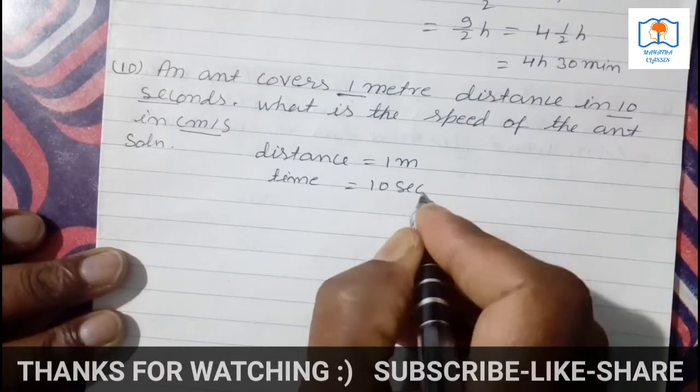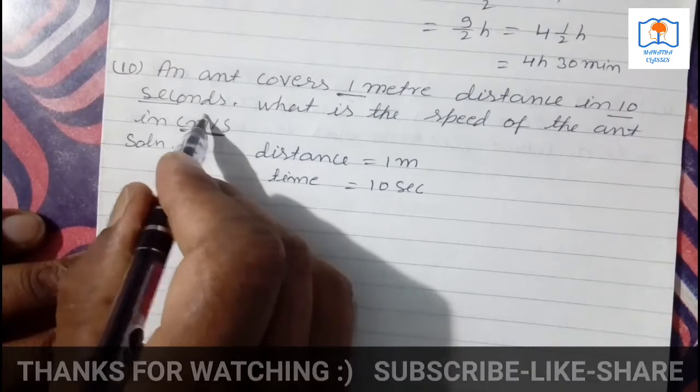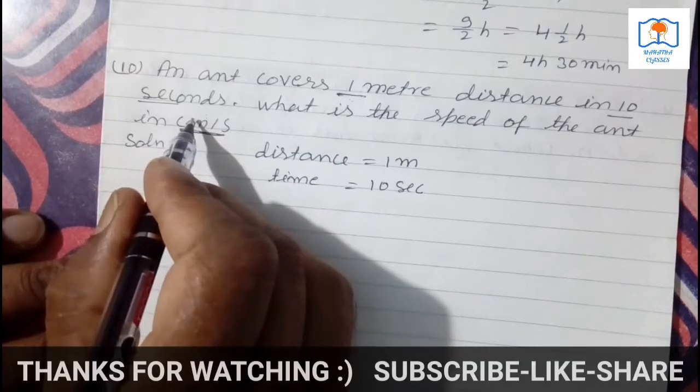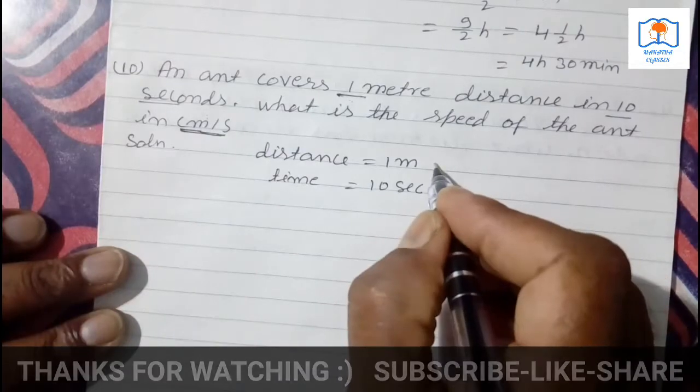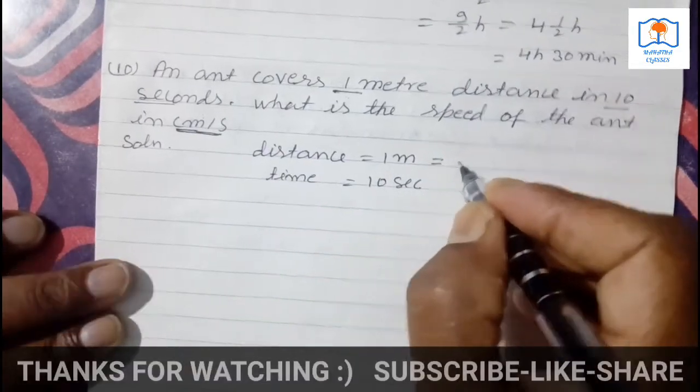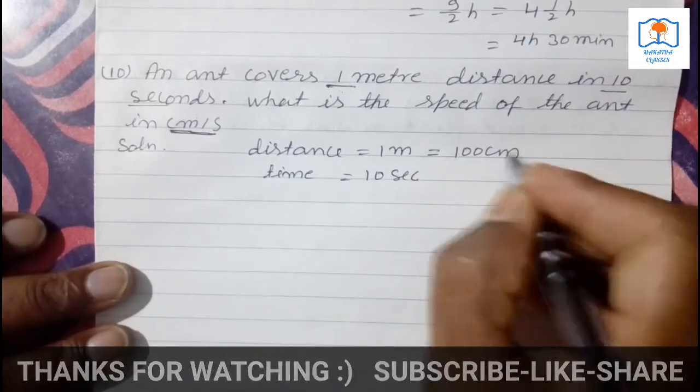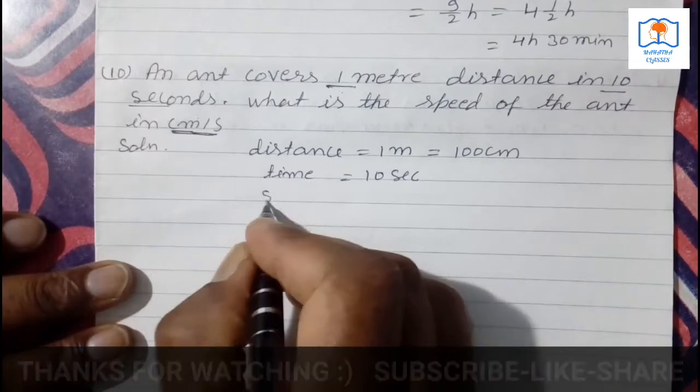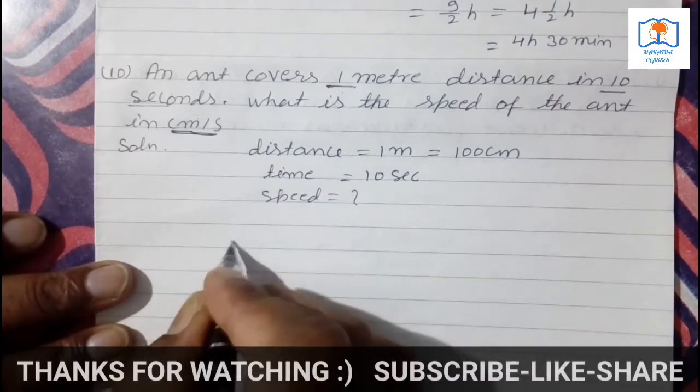10 seconds. Children, speed is in centimeters per second, so the unit of distance is centimeter. So you must convert this distance. 1 meter is equal to 100 centimeter. Now what will you find? Speed.